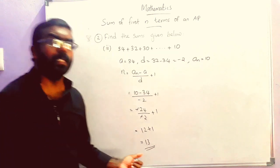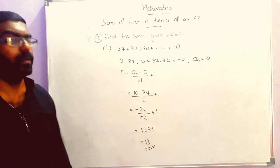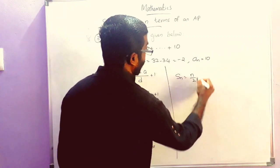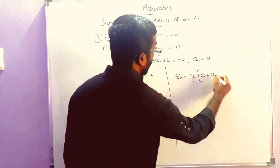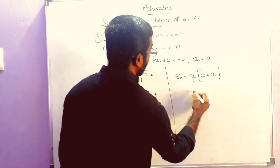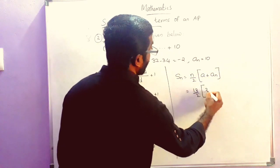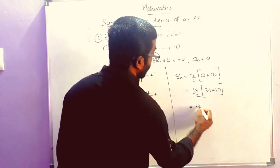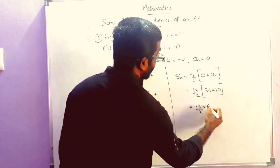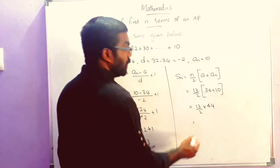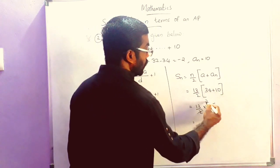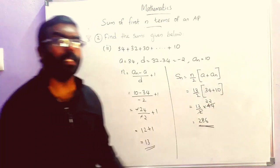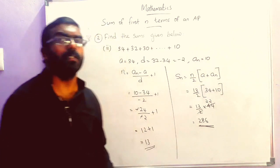That means there are 13 terms in the AP. Now the sum S_N is equal to N by 2 into A plus AN. So 13 by 2 into 34 plus 10, which equals 13 by 2 into 44. The 44 and 2 cancel to give 22. 13 into 22 is 286. So the sum is 286.